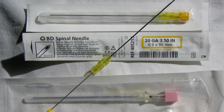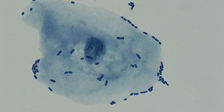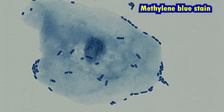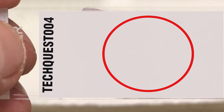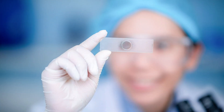CSF sample processing: CSF is a stat sample and should be processed immediately. The sample should be centrifuged for 10 minutes at low speed around 1000 rpm. The supernatant is separated, and the sediment is mixed gently. Smears are made for gram stain, methylene blue stain, and if required, Ziehl-Neelsen stain. A drop of sediment is placed on a glass slide, incubated at 37°C, air-dried for 2-3 minutes, then concentrated by adding 3-4 drops and drying again. The dried smears are heat-fixed and stained.